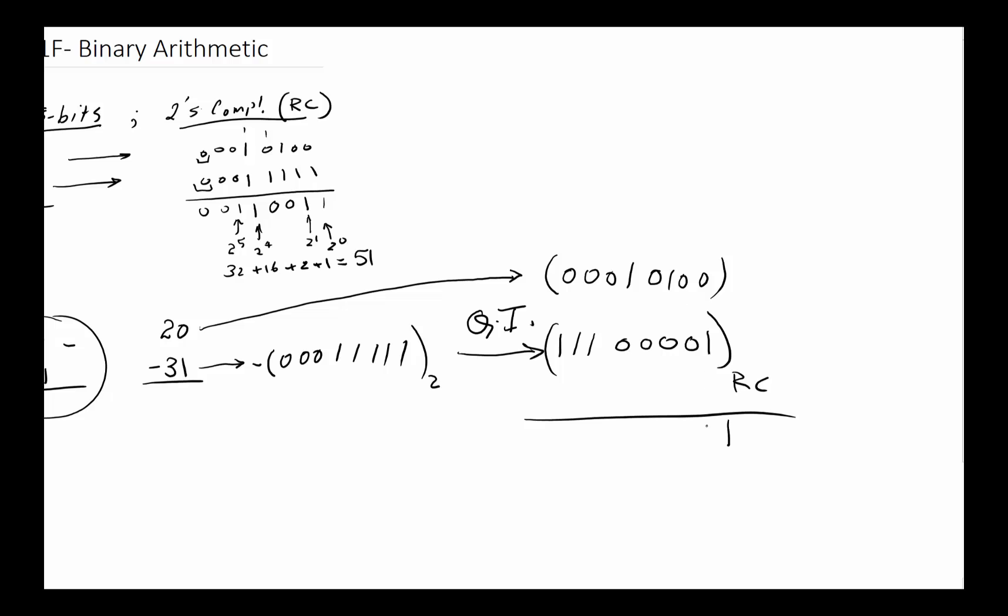1 plus 0 is 1. 0 plus 0 is 0. 1 plus 0 is 1. 0 plus 0 is 0. 0 plus 1 is 1. 0 plus 1 is 1. 1, 1, 1. Now that's my result.